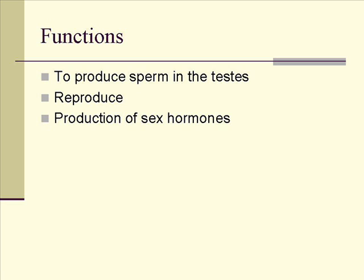One sub-function is the production of sperm, which happens in the testes. Sperm are the male sex cells — the equivalent of eggs in females. And then also the production of sex hormones. The main sex hormone in males is testosterone, which we'll talk about later.